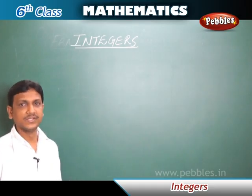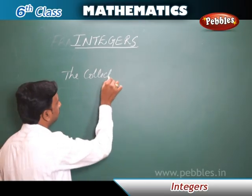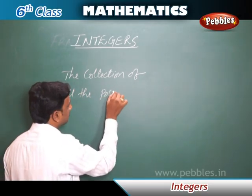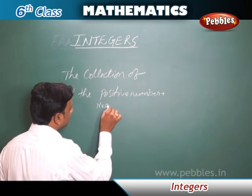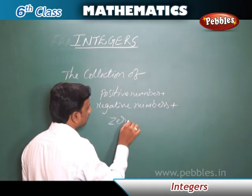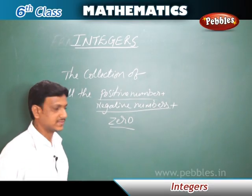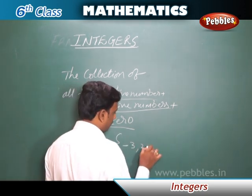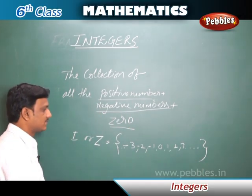Integers. In this chapter, we are going to learn about integers. What are integers? Integers are the collection of all the positive numbers, plus negative numbers, plus zero. The collection of positive numbers, negative numbers, and zero all together is called integers. It is denoted by the letter I or Z.